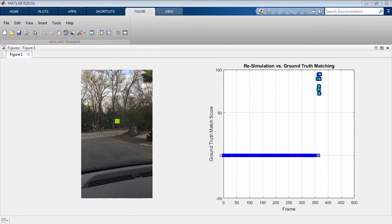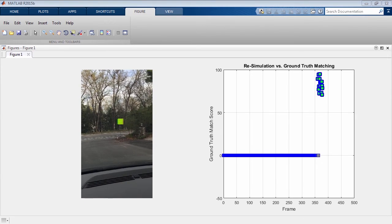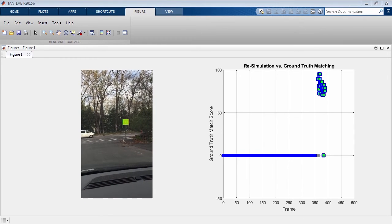In this example, I re-simulate the video data and plot how the traffic sign detection compares with the ground truth.